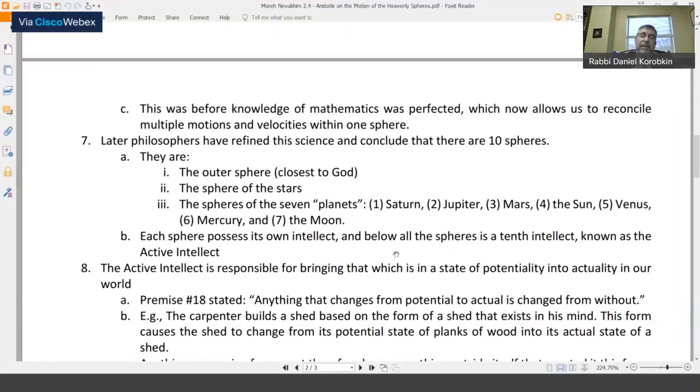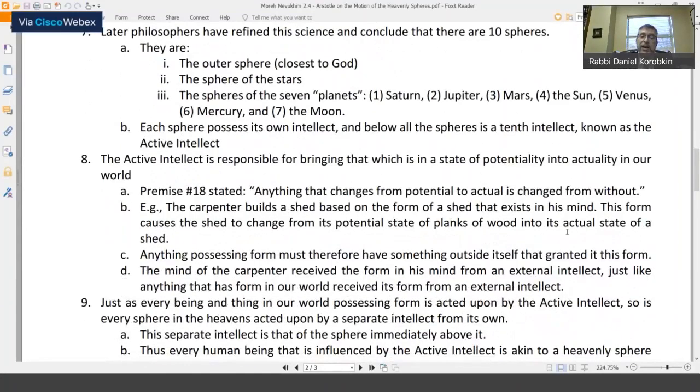Point number eight is the active intellect is responsible for bringing that which is in a state of potentiality into actuality in our world. So premise number 18 of the 26 premises that were contained in the introduction to section two stated that anything that changes from potential to actual is changed from without. And so the example that we just described is the carpenter. Here the Rambam uses the example of building a shed. The carpenter builds a shed from wood based on the form of a shed that exists in his mind. This form causes the shed to change from its potential state of planks of wood into its actual state of a shed. Anything possessing form must therefore have something outside of itself that granted it this form. The mind of the carpenter received the form in his mind itself. He acquired that from an external intellect just like anything that has form in our world received its form from an external intellect.